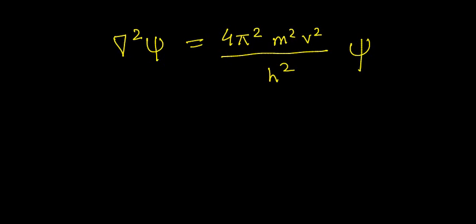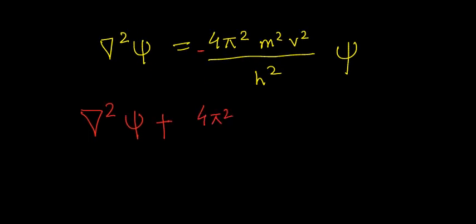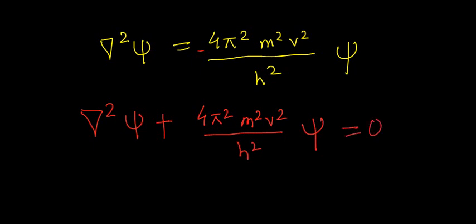Taking all terms to one side, we get ∇²ψ plus 4π²m²v² by h² into ψ equals zero. We will now use the kinetic and potential energy to make this equation into something more relatable.